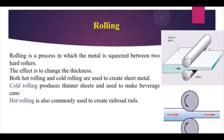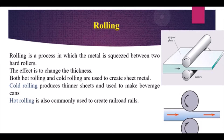Rolling is a forming process in which material is squeezed between two rotating rollers to change its thickness. Cold rolling produces thinner sheets and is used for making beverage cans, while hot rolling is commonly used for railroad rails and tracks.